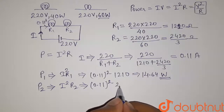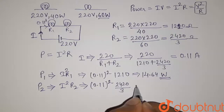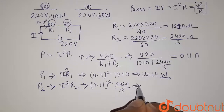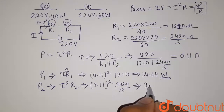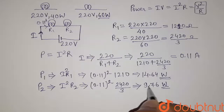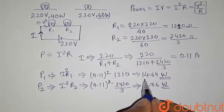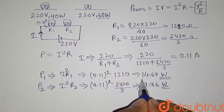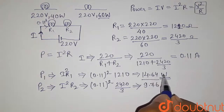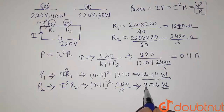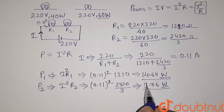R2 = 2420/3 ohm, giving P2 = 9.76 watt. So when the two lamps are connected in series, the power consumed by Lamp 1 is 14.64 watt and the power consumed by Lamp 2 is 9.76 watt.